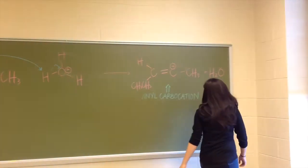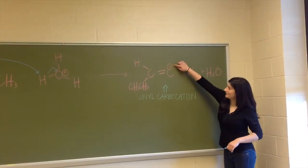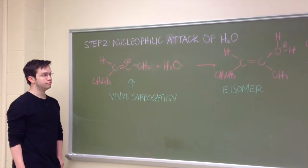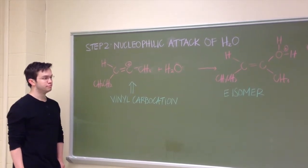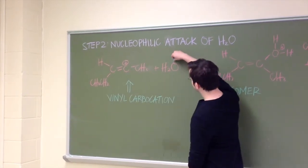This will lead to the formation of a vinyl carbocation, which is an unstable species. Second step is a nucleophilic attack of H2O. One of oxygen's lone pairs is going to attack the positively charged carbon in the carbocation.